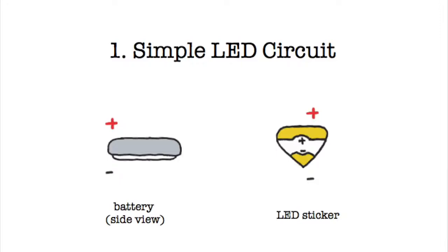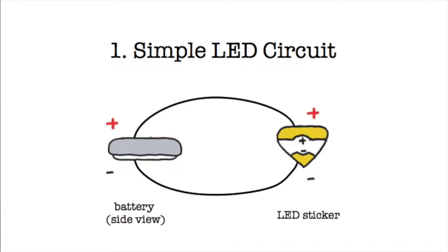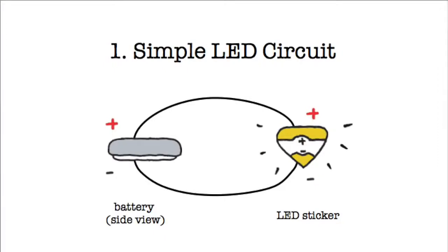Finally, you have your connector, such as wire or conductive foil tape, which connects the plus side of the battery to the plus side of the LED, and the minus side of the battery to the minus side of the LED. When everything is connected in this complete loop, current or power can flow through your battery to your light, causing it to turn on.